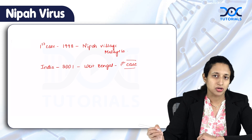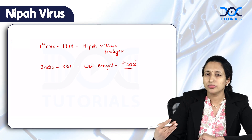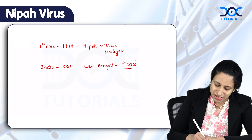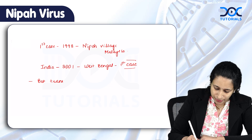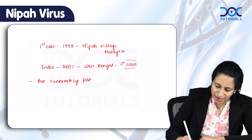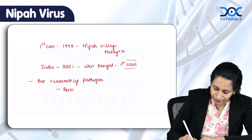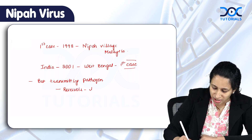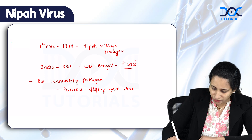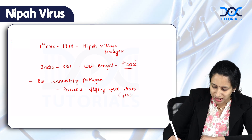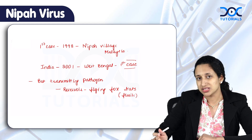One of the reasons why there have been a lot of these outbreaks is also because of occupation — a lot of people who work with anything related to palm trees. This is considered to be a bat-transmitted pathogen, because the reservoir is what is known as flying fox bats. Flying fox bats or fruit bats are the ones considered to be the reservoir. It is very important to know that this virus is being transmitted by bats.